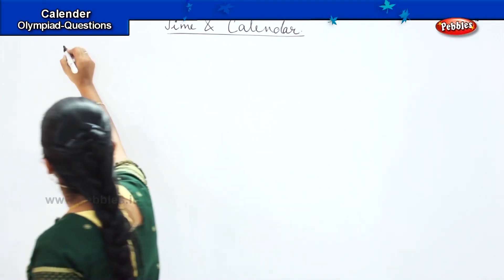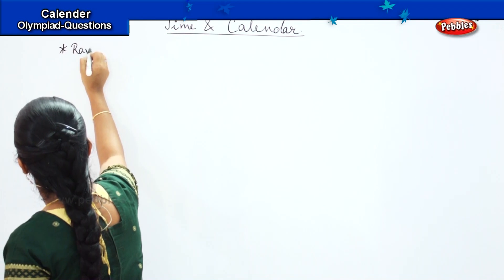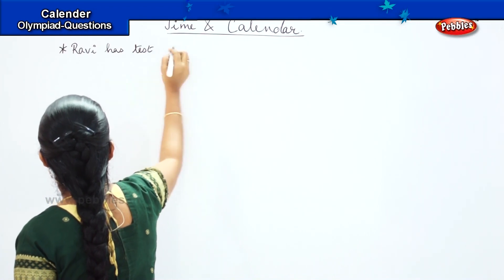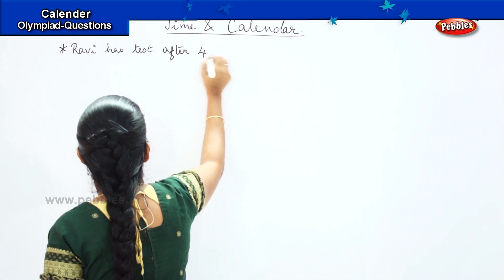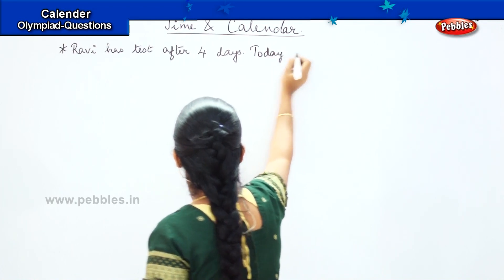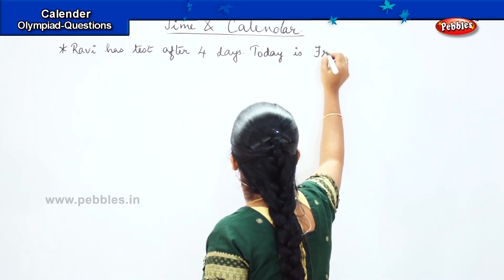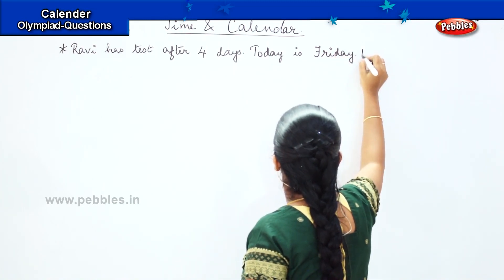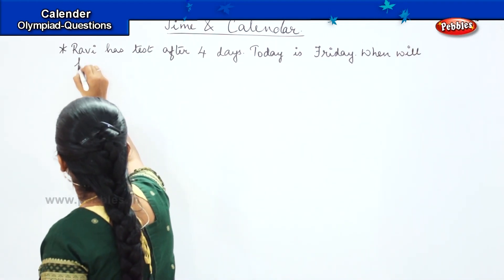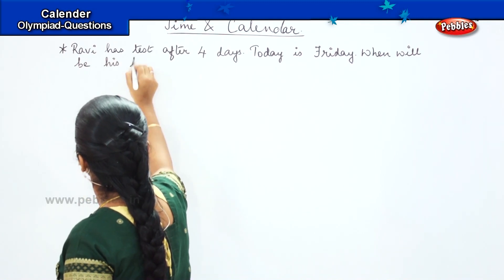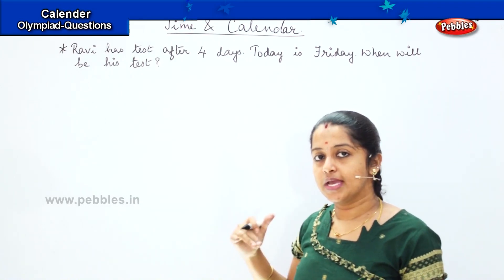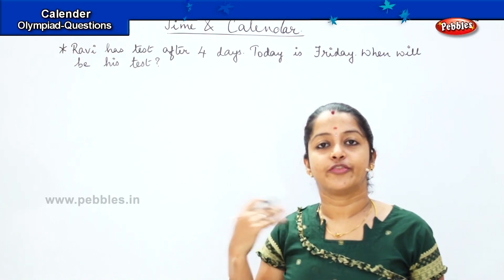The next question is: Ravi has a test after four days and today is Friday. Did you understand the question, children? Ravi is having a test after four days and today is Friday. So you have to count four days from today.